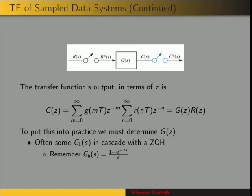In order to find this transfer function, we need to determine the plant's transfer function in the Z domain. This is oftentimes some G1(S), a transfer function that's in cascade with a zero-order hold. And remember, the transfer function for a zero-order hold is (1 minus E to the negative TS) over S.